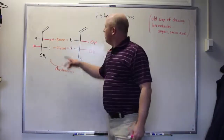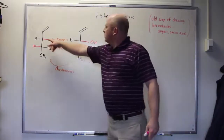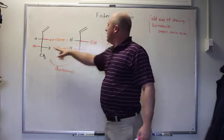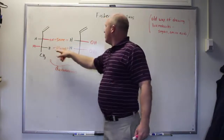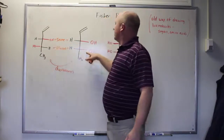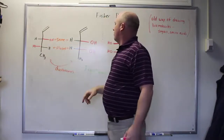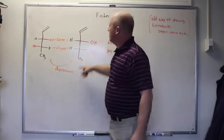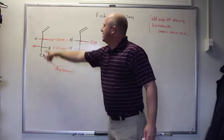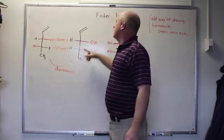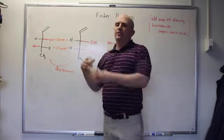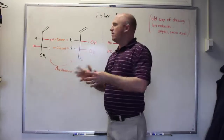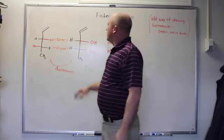And you have one stereogenic center that flips. So again, what we have is one stereogenic center has remained the same and the other stereogenic center has flipped. Therefore, these molecules are diastereomers. One stereogenic center the same, one has flipped.